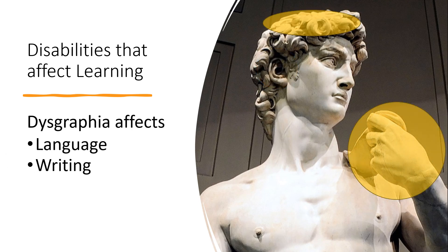Dysgraphia is a learning disability that affects language, particularly writing. Writing involves a lot of activity in the brain as it combines vocabulary, grammar, hand coordination, and memory. A writing disorder would become apparent with difficulty in spelling, illegible handwriting, and/or putting thoughts on paper.